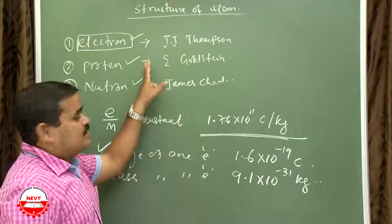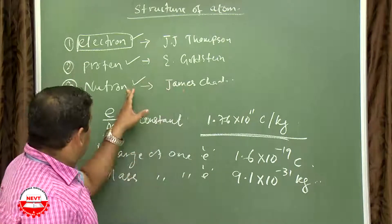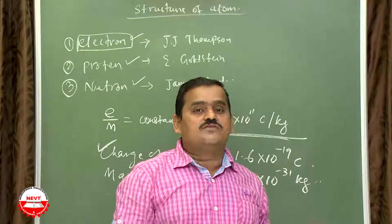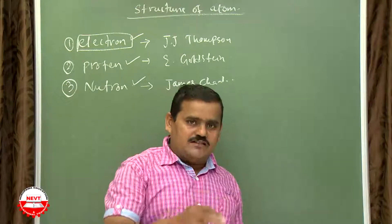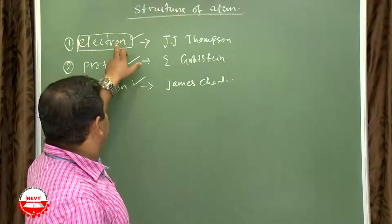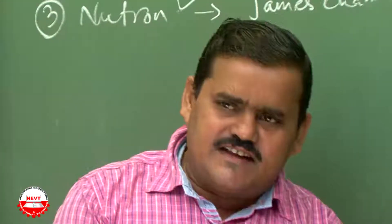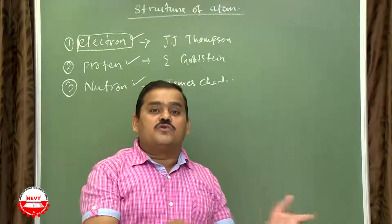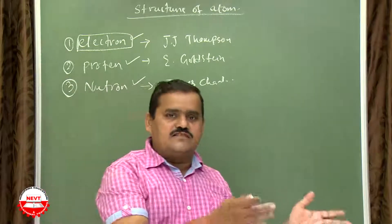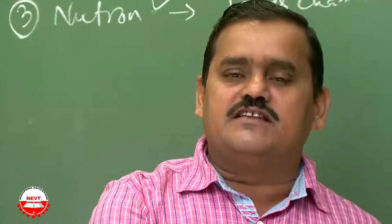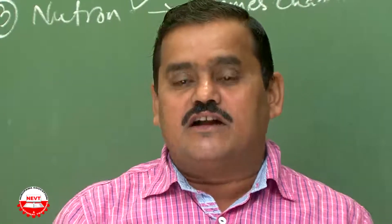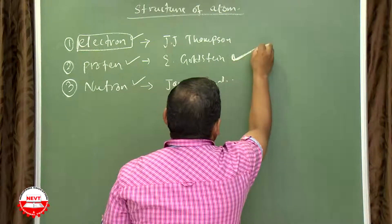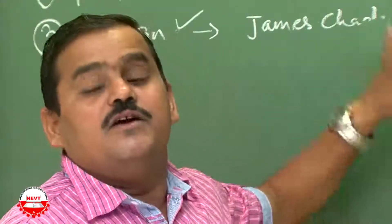Next we will discuss the proton — the anode ray — then the discovery of the neutron. The electron was discovered by J.J. Thomson. Since a negative subatomic particle is present inside the atom, there must also be a positive particle, because any substance is electrically neutral. What is that positive particle? It was discovered by E. Goldstein.